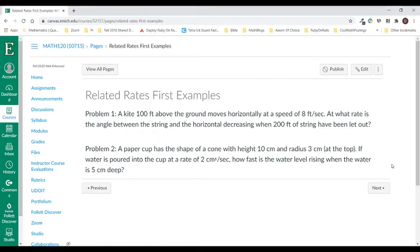Okay, here we're working on our second related rates question. Again, a little bit more complicated than the usual starter problems, but here we go. A paper cup has the shape of a cone with height 10 centimeters, that's about 4 inches, and radius 3 centimeters at the top. If water is poured into the cup at a rate of 2 cubic centimeters per second, how fast is the water level rising when the water is 5 centimeters deep?